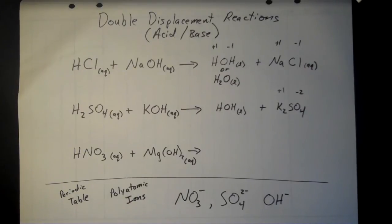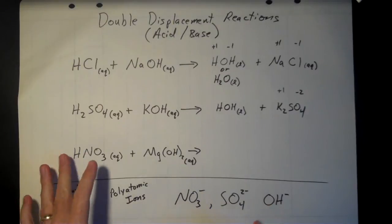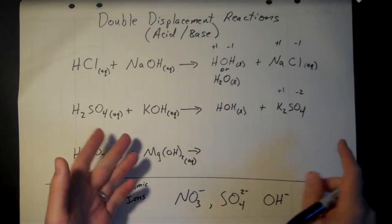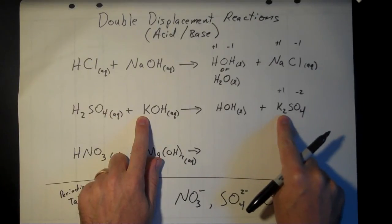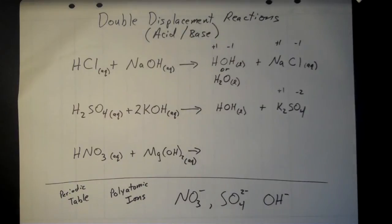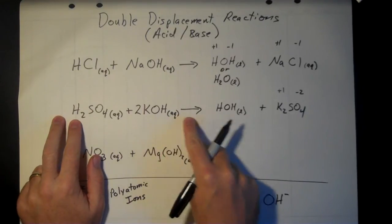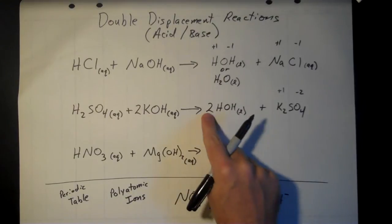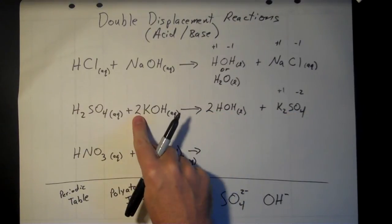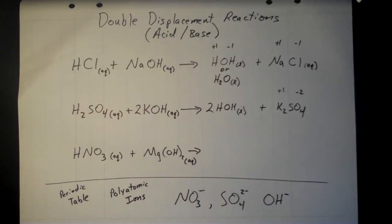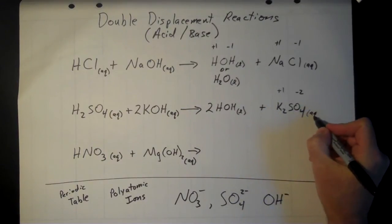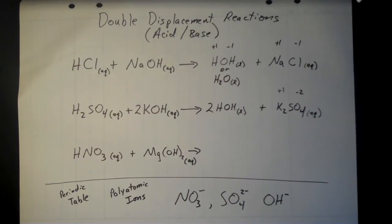Now balance the overall equation. Balance sulfur: one sulfur each side. Leave oxygen to the end. There's one potassium on the reactant side but two potassiums in K₂SO₄, so put a 2 in front of KOH, giving two potassiums. That gives two hydrogens from KOH plus two hydrogens from H₂SO₄ — four total — needing a 2 in front of the water. Potassium salts are always aqueous, so we put AQ after that and the reaction is done.